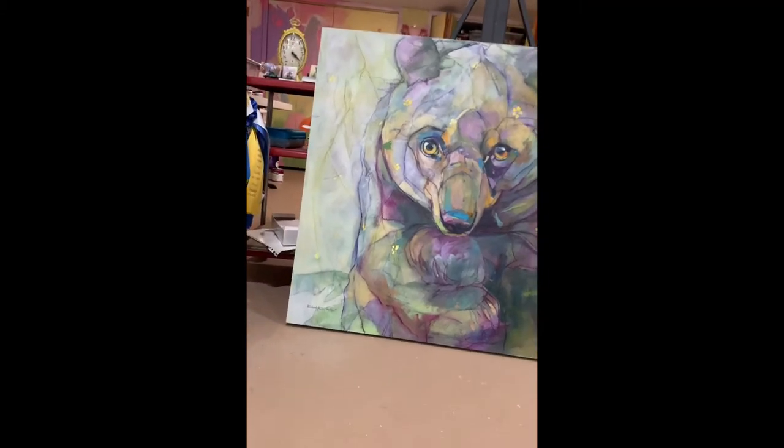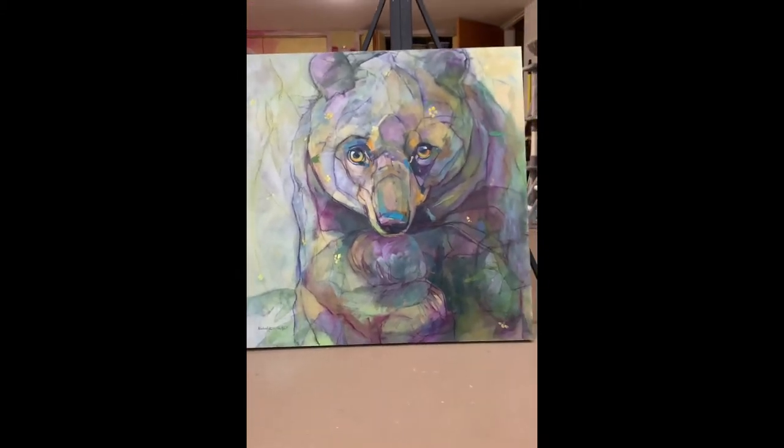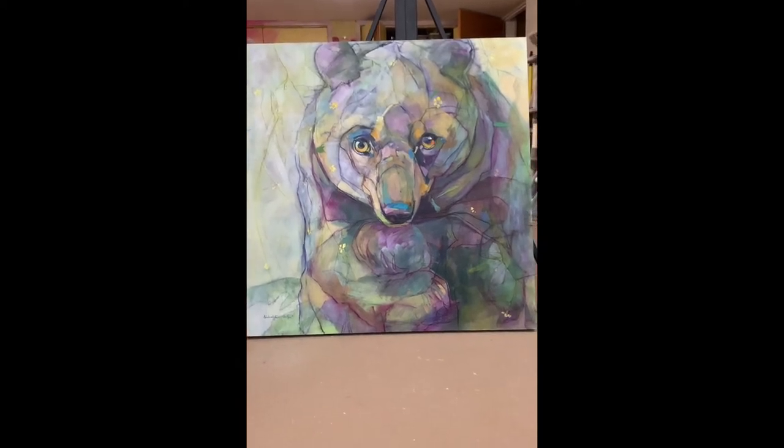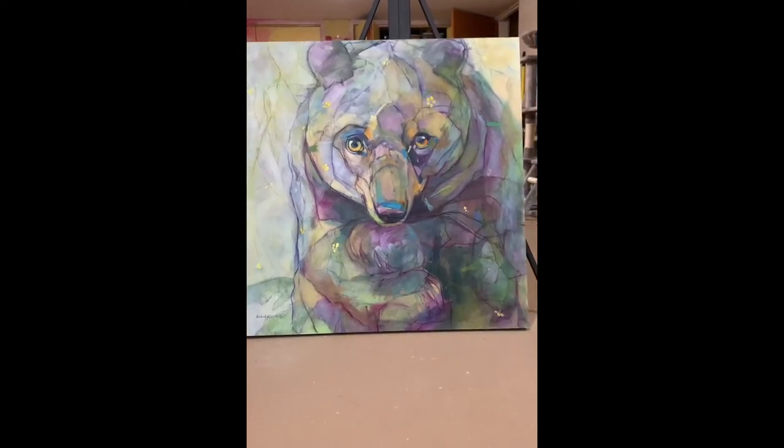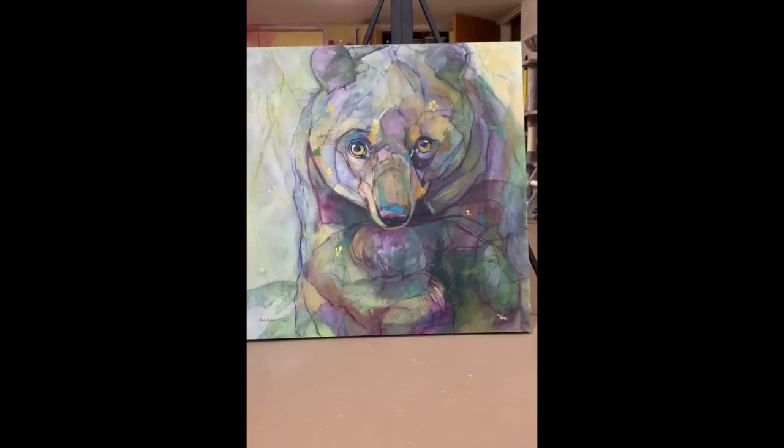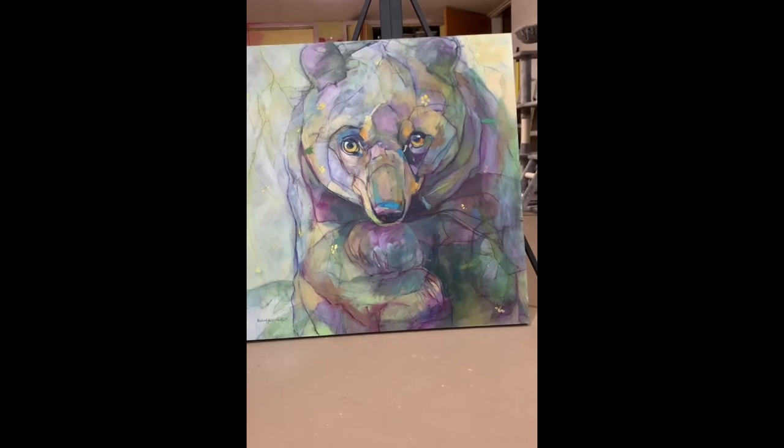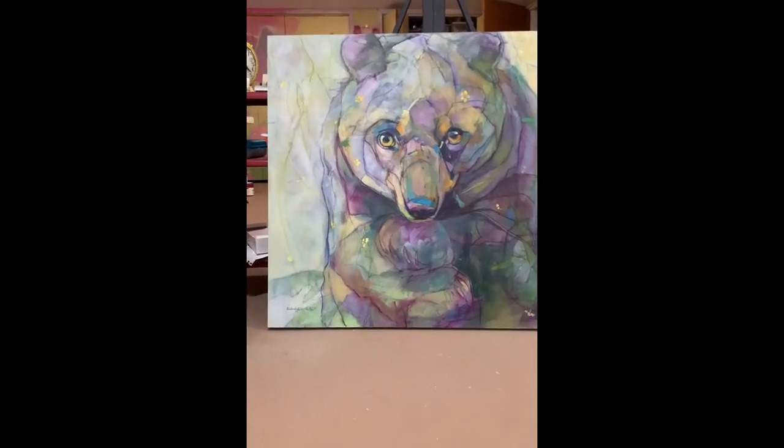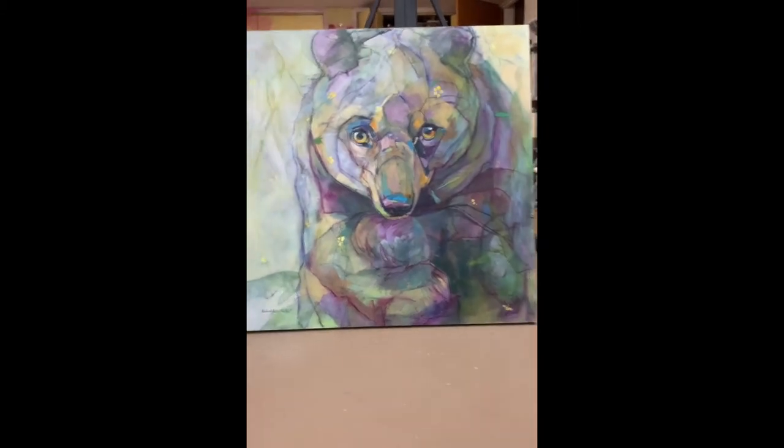So there are two different things that happen. Come on, Mona, you're making this really hard. There are two different things that happen with complementary colors. So we know that when we put them side by side, they zing. There's an optical illusion that happens and it makes each of the individual colors, the complements, appear to be brighter than they actually are.